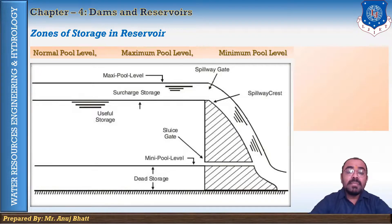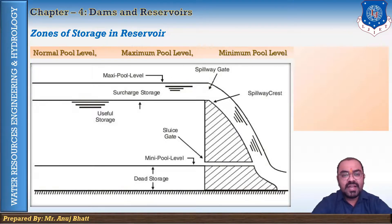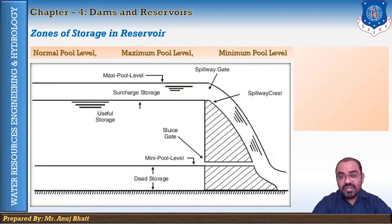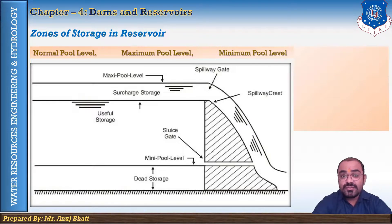Now let's see the minimum pool level and the maximum pool level. The maximum pool level is the maximum elevation to which the water surface will rise in the reservoir during peak flood time. It is sometimes also known as the maximum water level, or pool level during the design flood. The minimum pool level is the lowest elevation to which the water is drawn from the reservoir under normal conditions. This level is fixed by providing outlets in the dam, such as sluice gates.